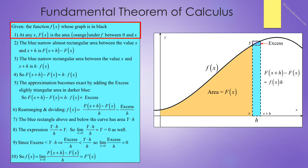We will now develop an informal proof that relates the concept of area under a curve and the indefinite integral process. We start with a function f of x, whose graph is shown in black. At any value x, capital F of x is the area, shown in orange, under small f, between 0 and x. We start at x, and move a slight distance h to the right to x plus h. We now focus on the blue, narrow, almost rectangular area between the value of x and x plus h, and that will be capital F of x plus h minus capital F of x, as we are talking about the area.